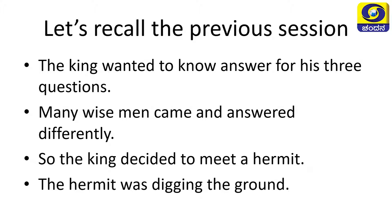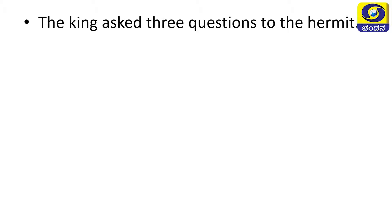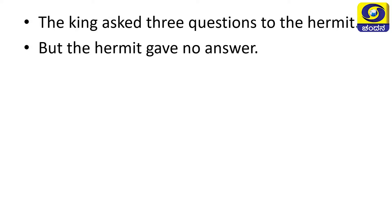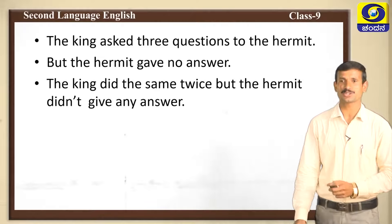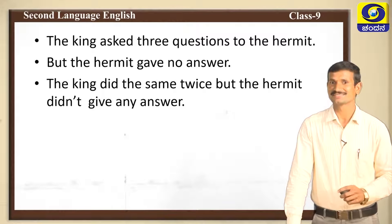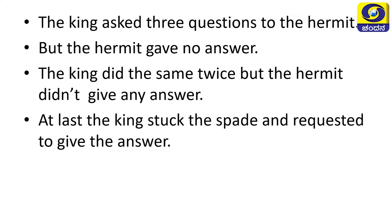The hermit was living in a small hut and was digging the ground. The king asked the three questions to the hermit — he repeated: What is the right time to begin something? Who should a king listen to? What is the most important thing for a king to do? But the hermit gave no answer. The king repeated the questions again and again.